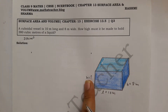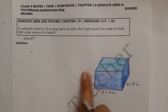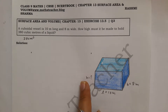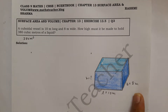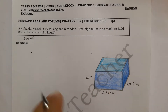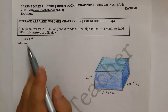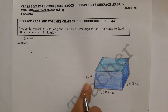It is simple — we will use the formula. There will be 3 values, so we keep the volume equal to the given values. We will use that to find the height.